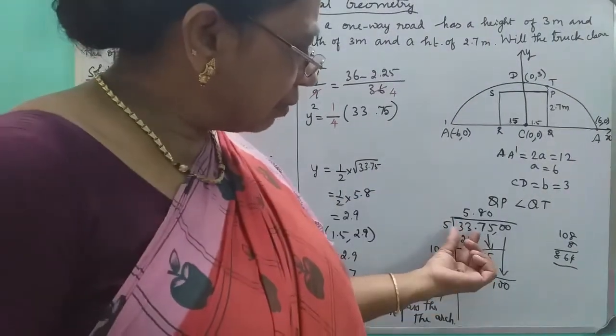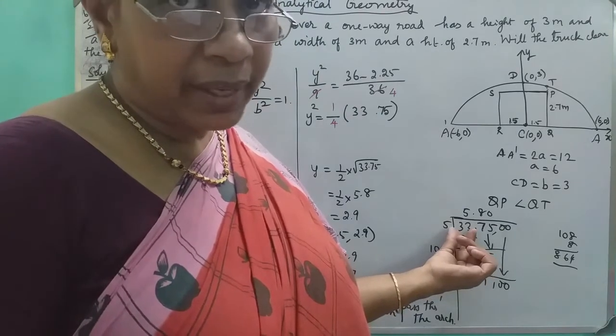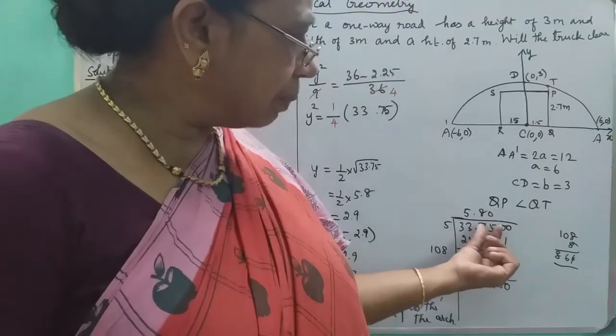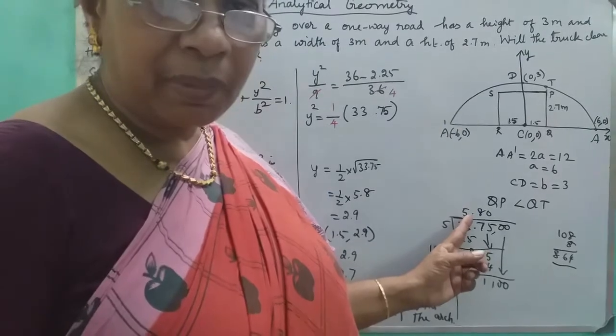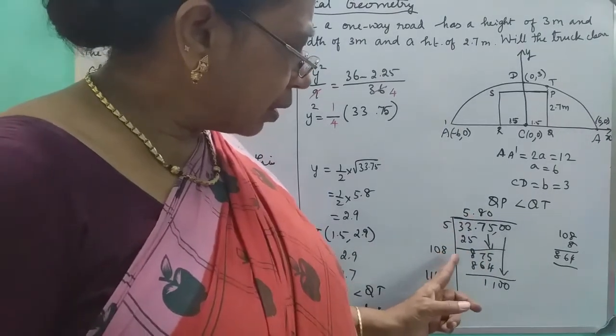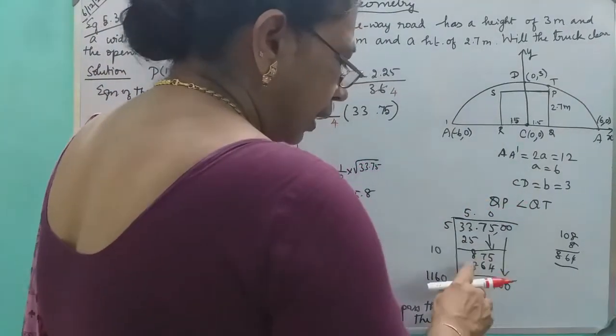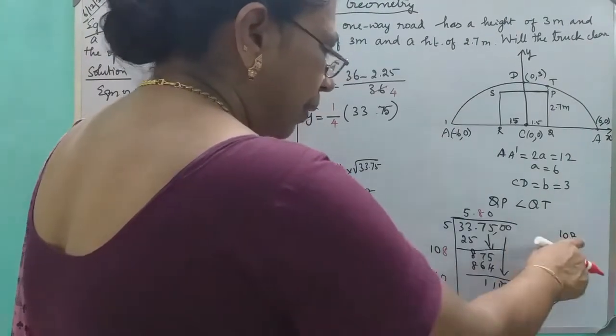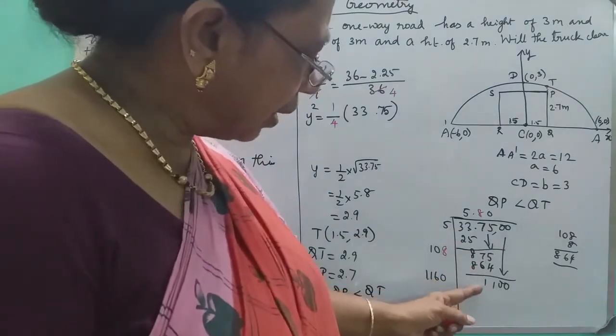We need to calculate the square root. 33 is close to the perfect square 25, which is 5 squared. Using long division method for the square root of 33.75, we bring down pairs and calculate. After working through the calculation, we get approximately 5.8.